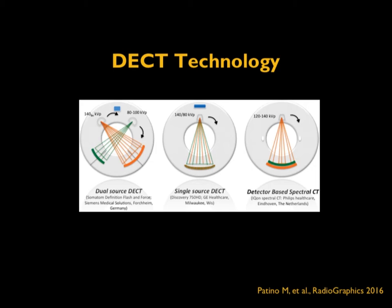The three main distinct methods are: first, dual source CT with two x-ray tubes set at two different tube voltages, automatically producing two different energy beam spectra; second, a single source where the x-ray tube switches between two different kV at every instance; and third, a single source with a dual-layer detector — the front layer absorbs the majority of low energy photons and the back layer absorbs the high energy spectrum. The fourth method is simply scanning the same area twice at two different tube voltages.